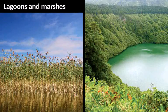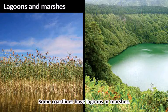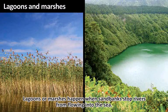Lagoons and marshes. Some coastlines have lagoons or marshes. Lagoons or marshes happen when sandbanks stop rivers from flowing into the sea.